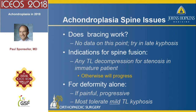The indications for spinal fusion include any thoracolumbar decompression for stenosis. In an immature patient, they must have instrumentation, because otherwise they will develop severe progressive worsening of their kyphosis. For deformity alone, there is no fixed indication for fusion, but if they have painful or progressive kyphosis, it's pretty certain they will need a decompression, and many times we will undertake that at adolescence.